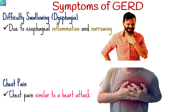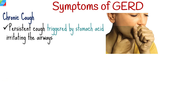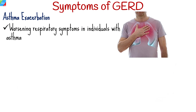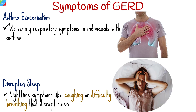Chest pain similar to a heart attack. Persistent cough triggered by stomach acid irritating the airways. Inflammation of vocal cords leading to hoarseness or chronic laryngitis. Worsening respiratory symptoms in individuals with asthma due to acid entering the airways. Nighttime symptoms like coughing or difficulty breathing that disrupts sleep.